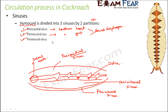The perineural sinus contains the nerve cord. The perivisceral and perineural sinuses are separated from each other by the ventral diaphragm. So from dorsal to ventral: pericardial sinus, then perivisceral sinus, then perineural sinus — these are the three parts of the hemocele filled with blood.